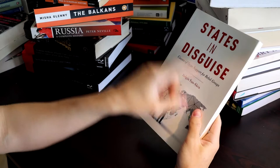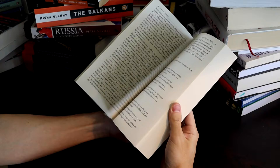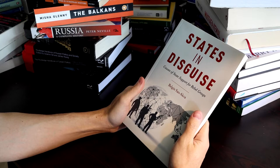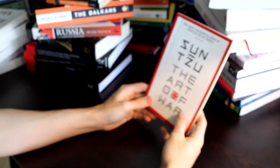States in Disguise. Causes of state support for rebel groups. I got this book recently. I think I was looking at books on the Taliban and this book came up. So I got it. I think it's going to be a fun book to read. Probably a lot of Syrian history in there.